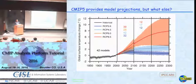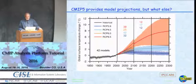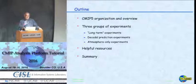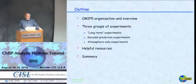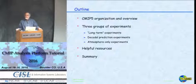Everybody's familiar with the historical run that goes into making the first part of this diagram and the various RCP scenario runs that show projections into the future. But what else is there in CMIP and what can be done with it? I'm going to tell you about all of the experiments in CMIP, but first starting with a little bit of an overview of the organization, then talk about the three groups of experiments: the long-term traditional uninitialized experiments, the decadal prediction experiments that Jerry gave you a good flavor for.